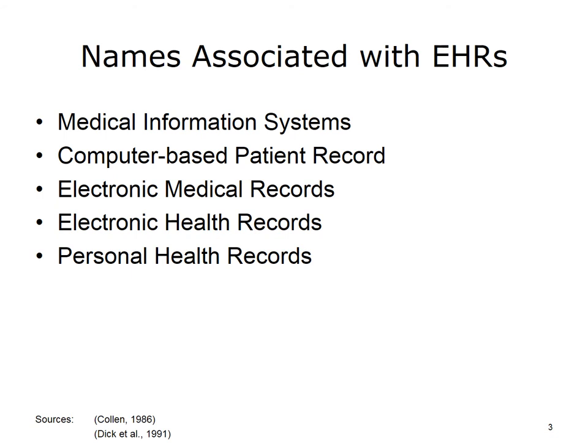In 2008, with funding from the Office of the National Coordinator for Health Information Technology, the National Alliance for Health Information Technology, or NAHIT, came up with definitions that made distinctions among electronic medical records, electronic health records, and personal health records. Although the alliance has since disbanded, the definitions it assigned still make sense.